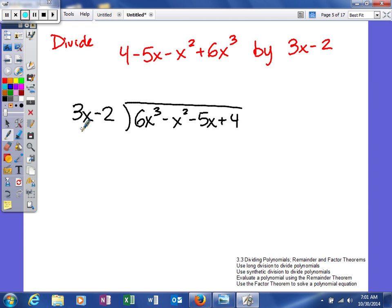Next, I'm going to go ahead and start my division process. So I look at this and say, what do I have to multiply 3x by to give me 6x cubed? And that answer is 2x squared. So I'm going to take this and multiply it by both of these terms right here. When I do that, I will get 6x to the third and then minus 4x squared.